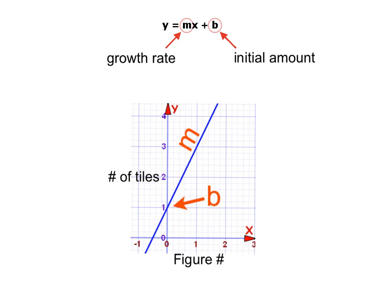Looking at this graph, we see that on the x-axis, if x equals the figure number, then figure zero is right here. And for figure zero, there is one tile in that pattern. And then for figure one, we see that there would be three tiles in that pattern.